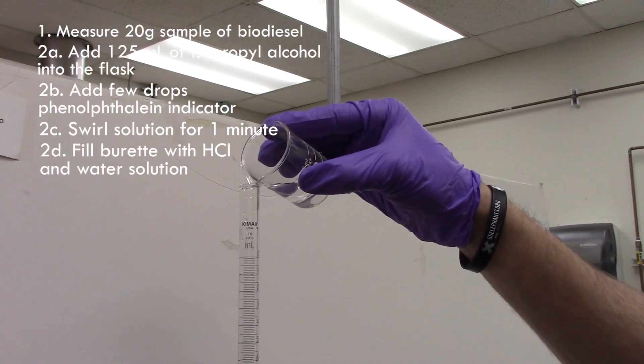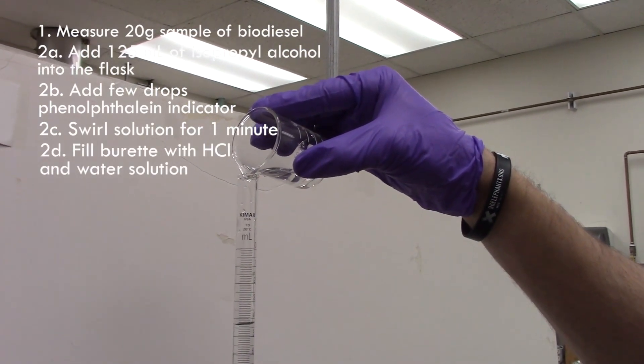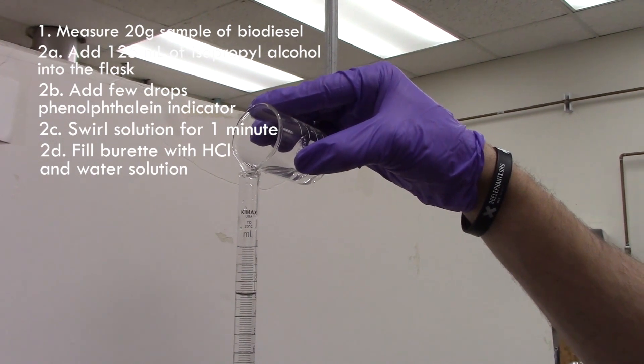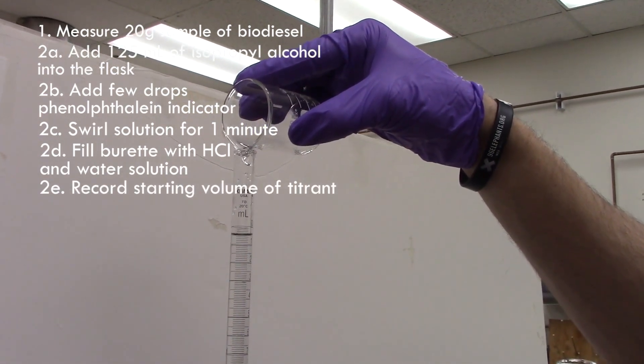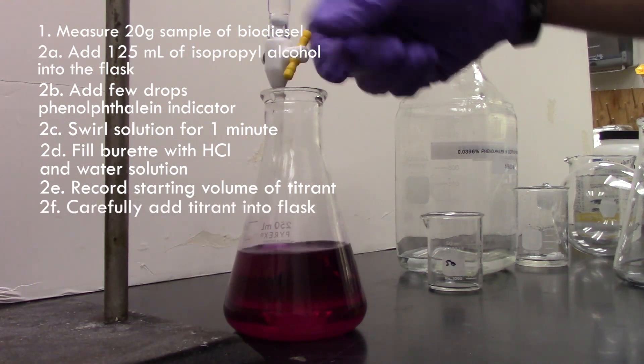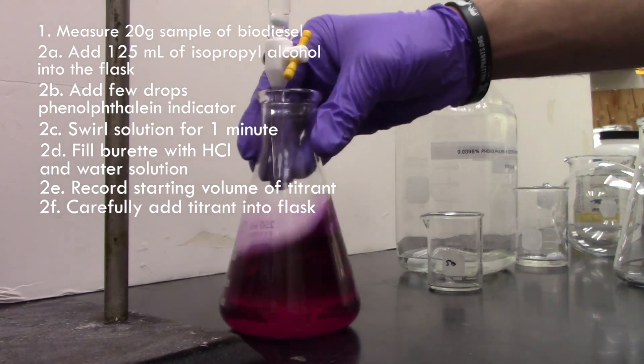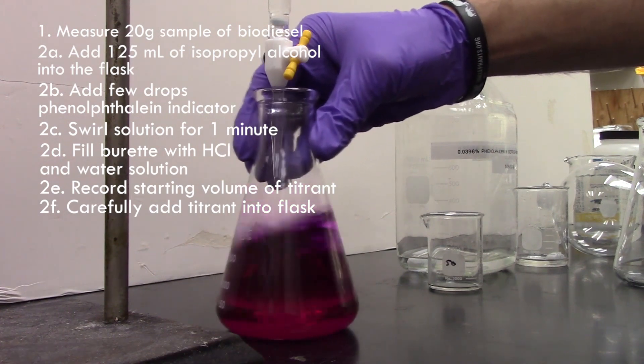Fill the burette with the known concentration of hydrochloric acid and water solution. Record the starting volume of titrant. Carefully add the titrant from the burette into the flask while swirling the solution to mix. Do not allow the solution to splash.